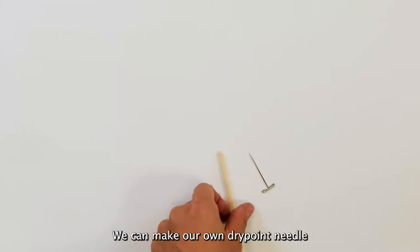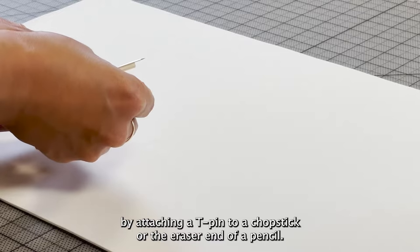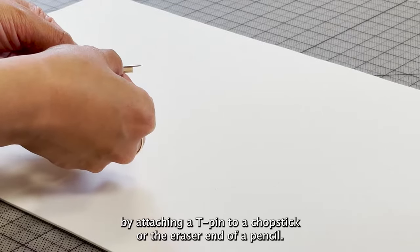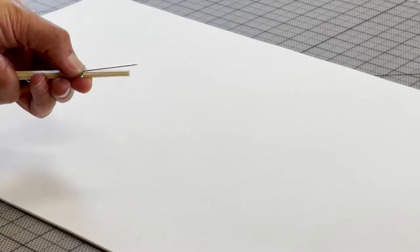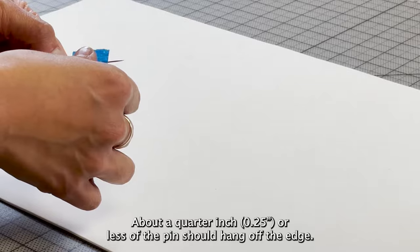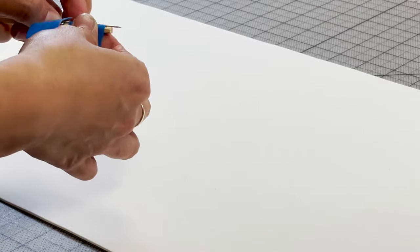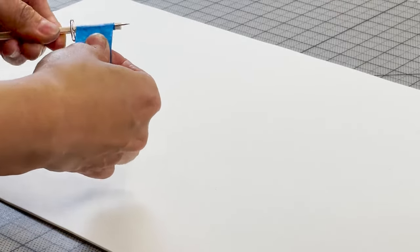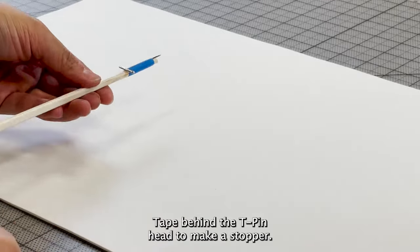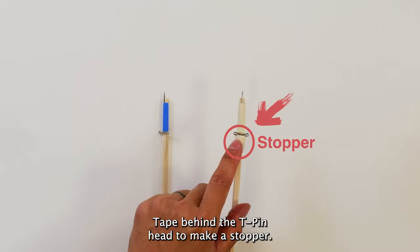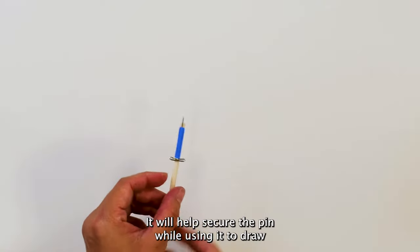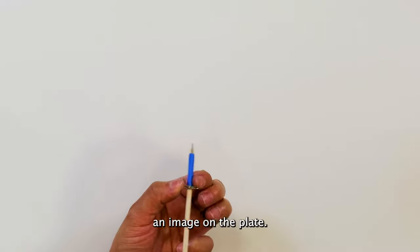We can make our own drypoint needle by attaching a T-pin to a chopstick or the eraser end of a pencil. About a quarter inch or less of the pin should hang off the edge. Tape behind the T-pin head to make a stopper. It will help secure the pin while using it to draw an image on the plate.